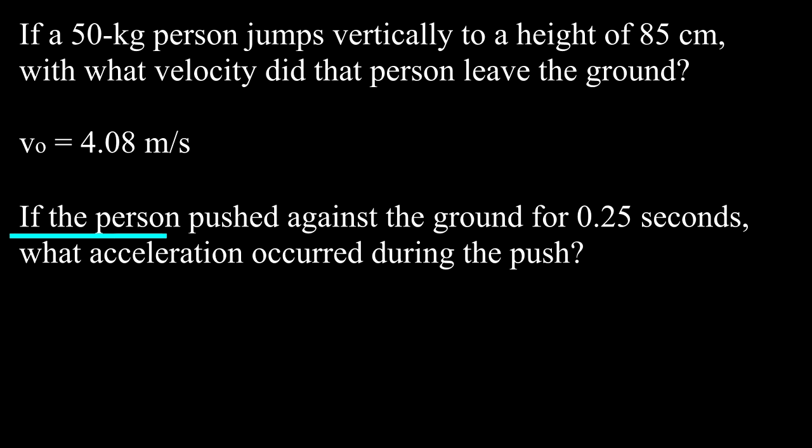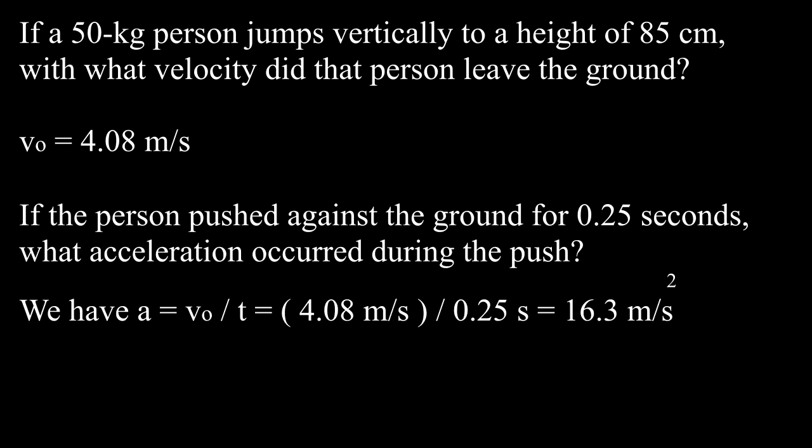If the person pushed against the ground for 0.25 seconds, what acceleration occurred during the push? We have A equals v-zero over T equals 4.08 meters per second divided by 0.25 seconds, which equals 16.3 meters per second squared.